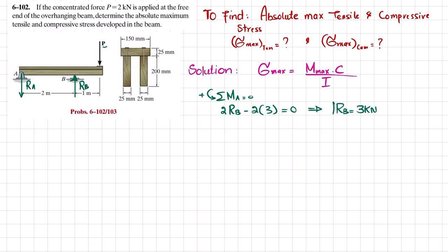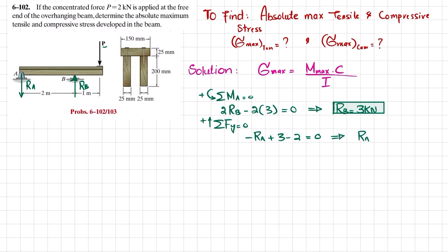Now using the sum of forces in the y-direction equals zero, with upward as positive: minus R_A plus R_B minus P equals zero, so minus R_A plus 3 minus 2 equals zero, giving R_A equals 1 kN.